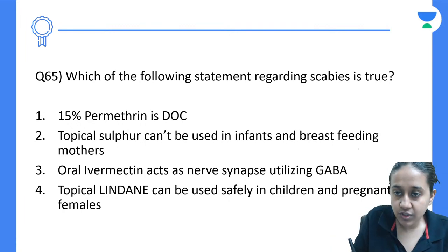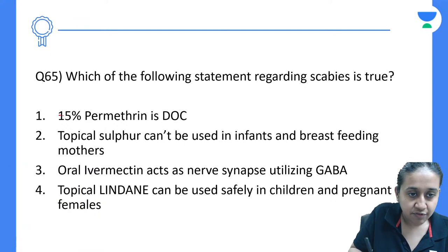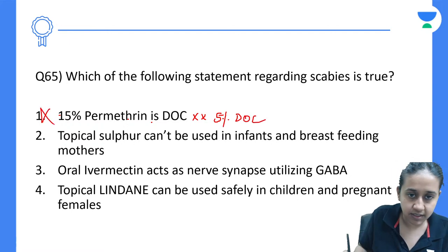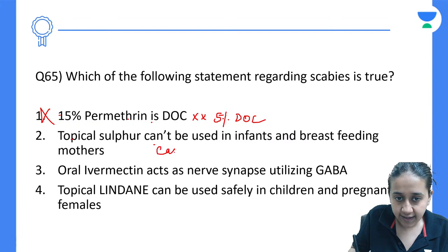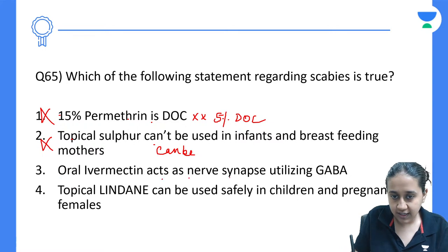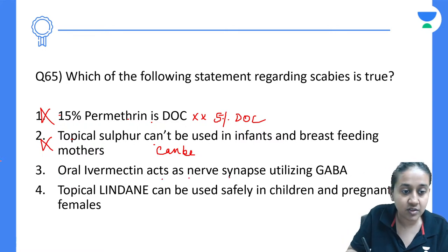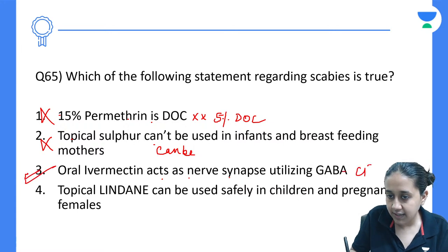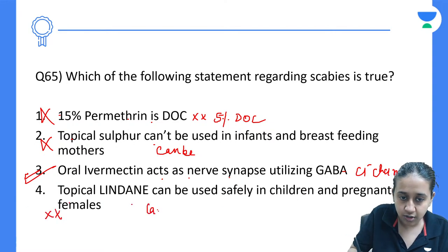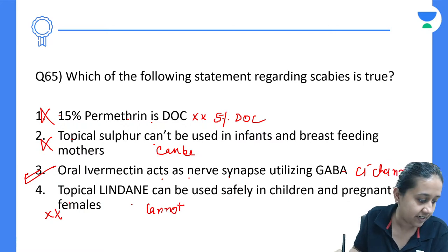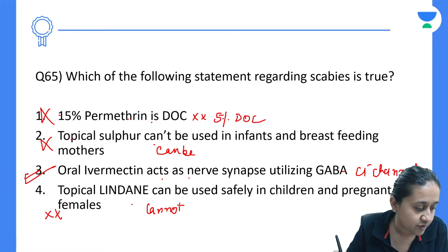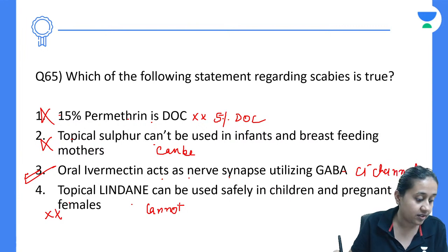Which of the following statements is true regarding scabies? 5% permethrin is the drug of choice — 15% is wrong. Topical sulphur can be given in infants — that is also wrong. Oral ivermectin acts on GABA-gated chloride channels — this is true. Topical lindane cannot be given in children or pregnant females — that is false. So the answer is option number 3.